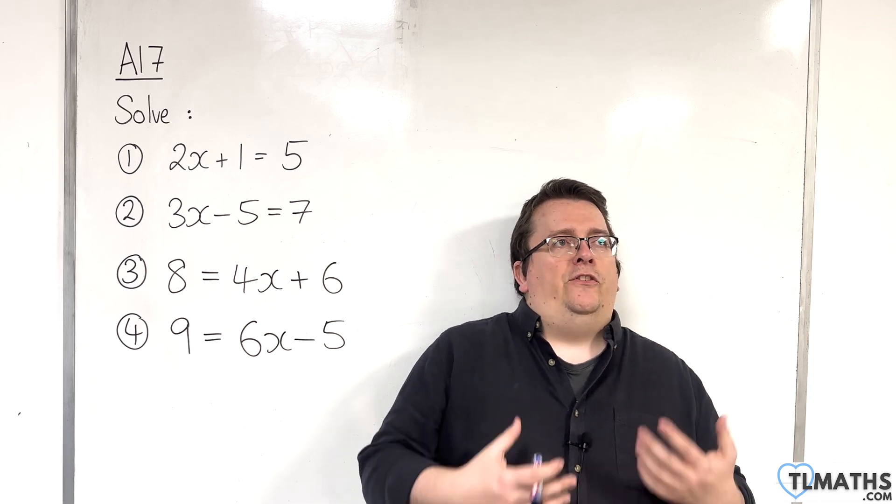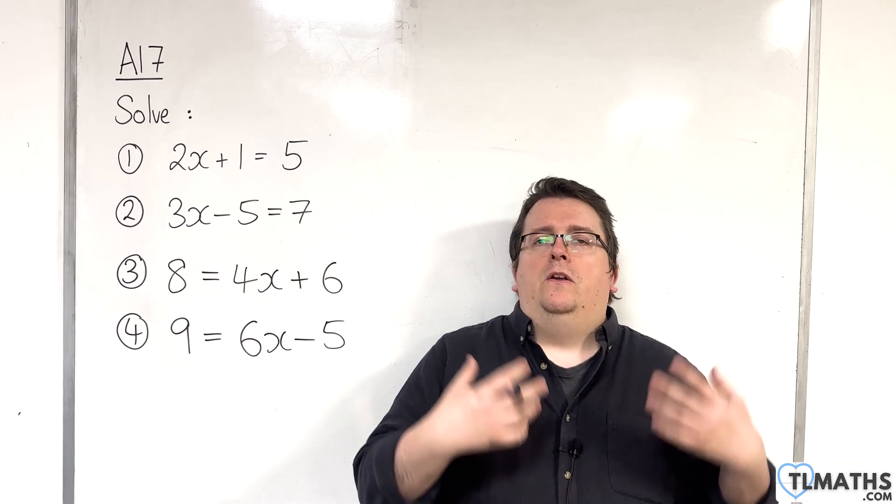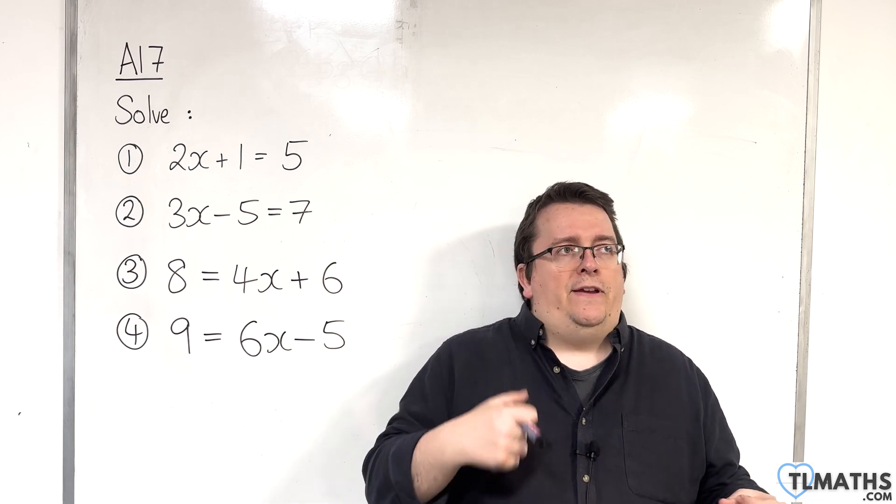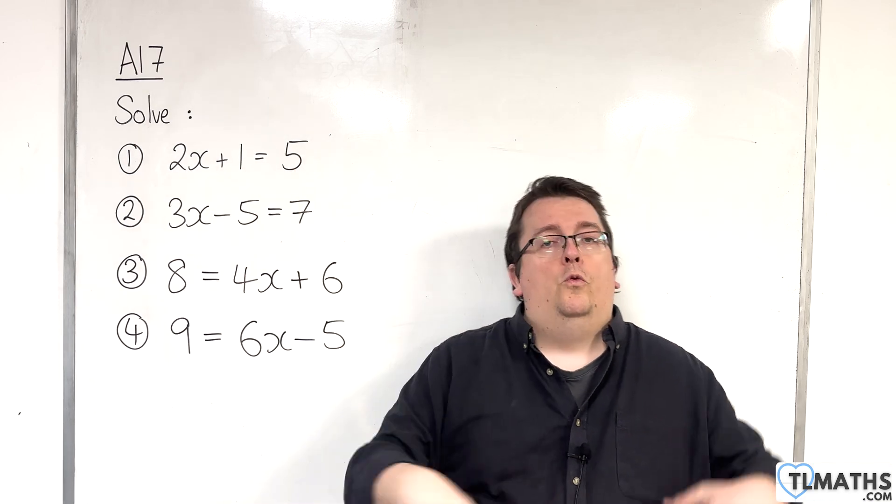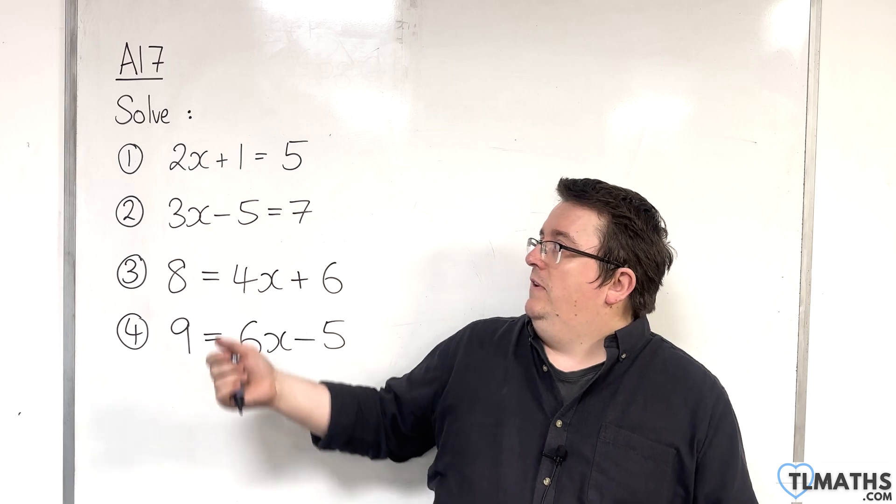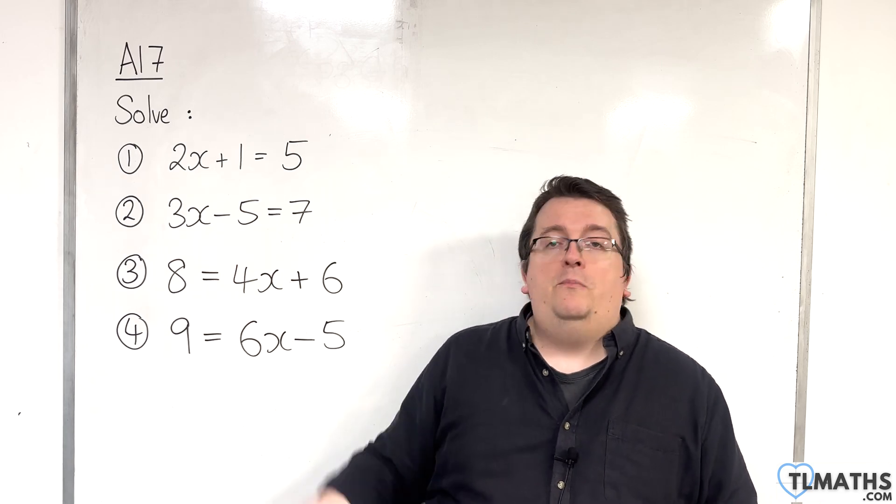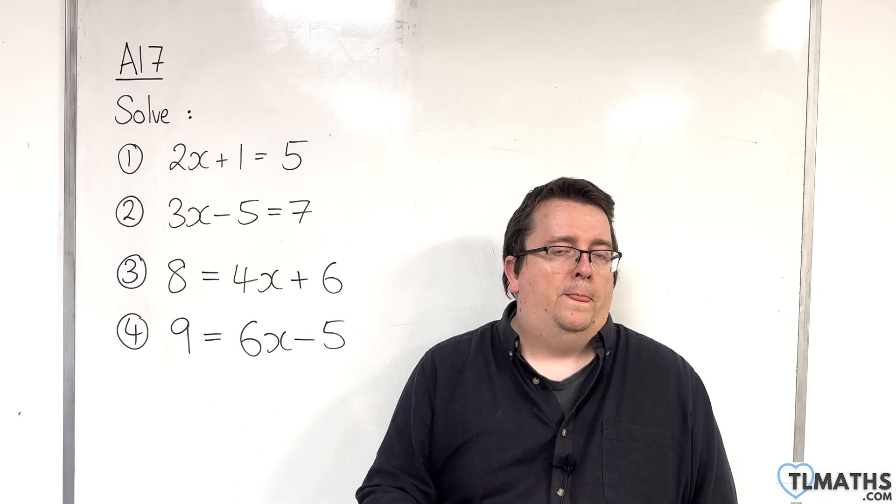So, if it says we are multiplying by 2, the process, the step is to divide by 2. If it says plus 1, we're going to subtract 1. If it says take away 5, we're going to add 5. If it says multiply by 4, we're going to divide by 4. OK, but should we subtract 1 first or divide by 2 first?